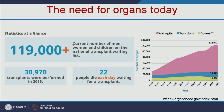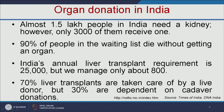Let us see why we need organ printing. According to the American organ donor website, at least 120,000 people are in the waiting list for organ transplantation, and each day at least 22 people lose their life due to lack of suitable organ transplantation. You can think about the whole world — how many people are losing their life without suitable organ transplant. In India, almost 1.5 lakh people need a kidney but only 3,000 of them receive it, and 90% of people in the waiting list die without getting an organ.